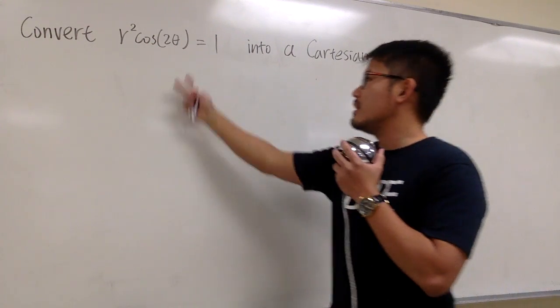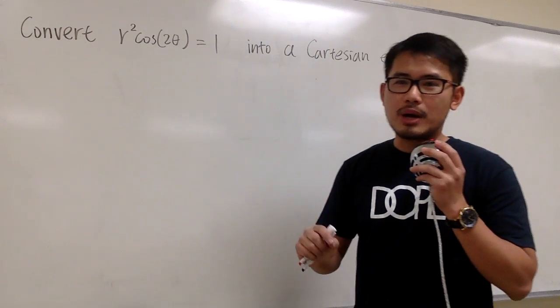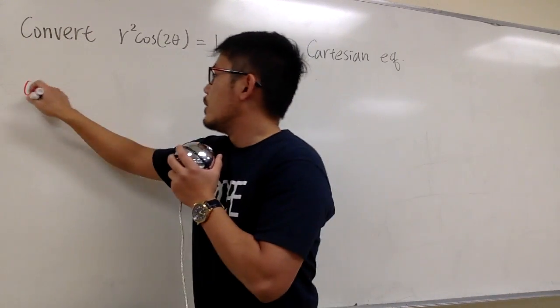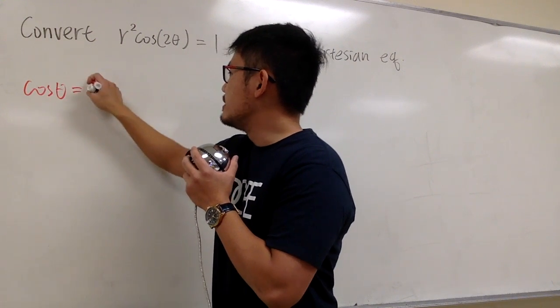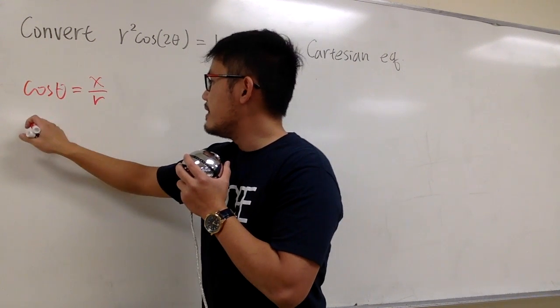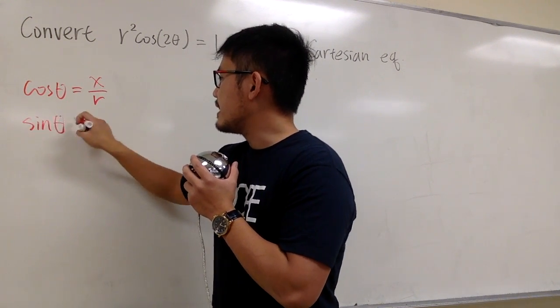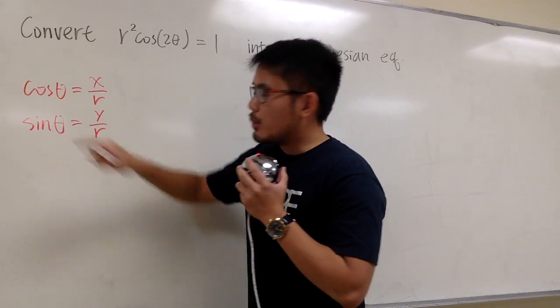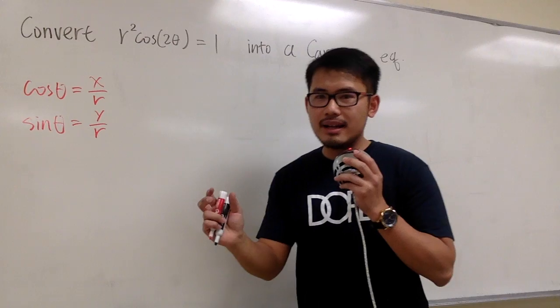We have a small trouble. This 2 theta is going to give us trouble. Why? Because the formulas that we have is cosine theta, we know this is x over r, and we also know sine theta is y over r. The angles that we are talking about is just theta, not 2 theta.